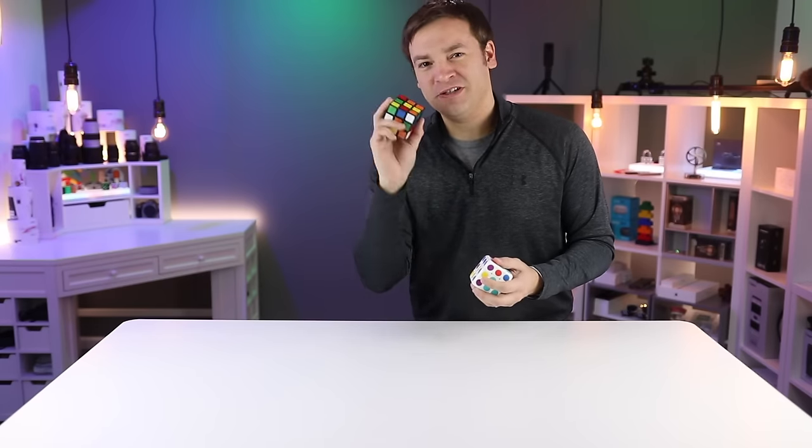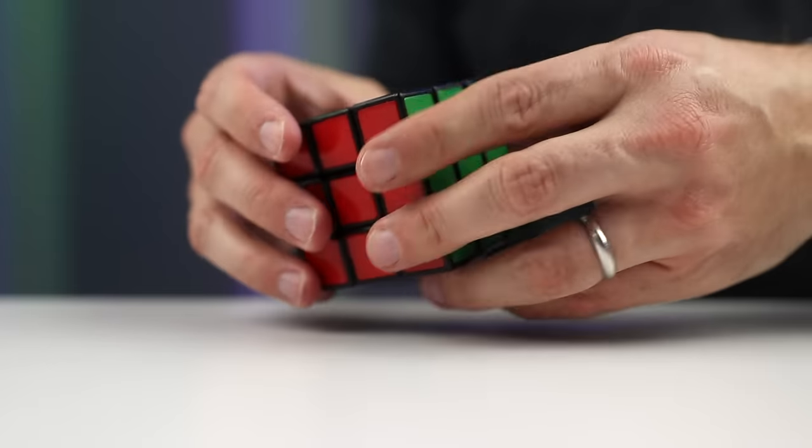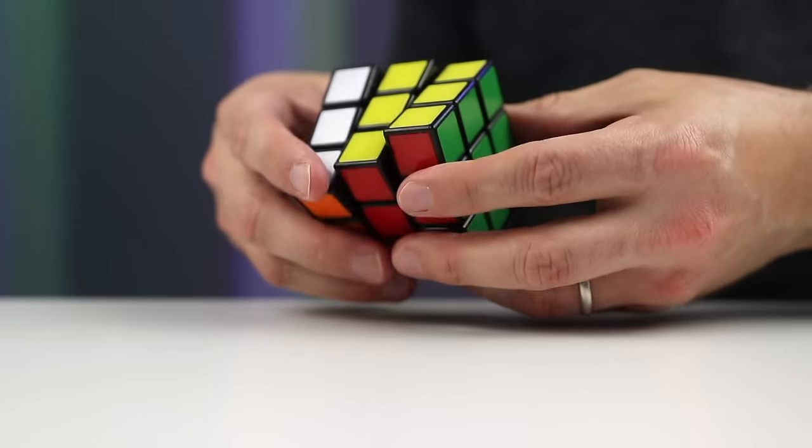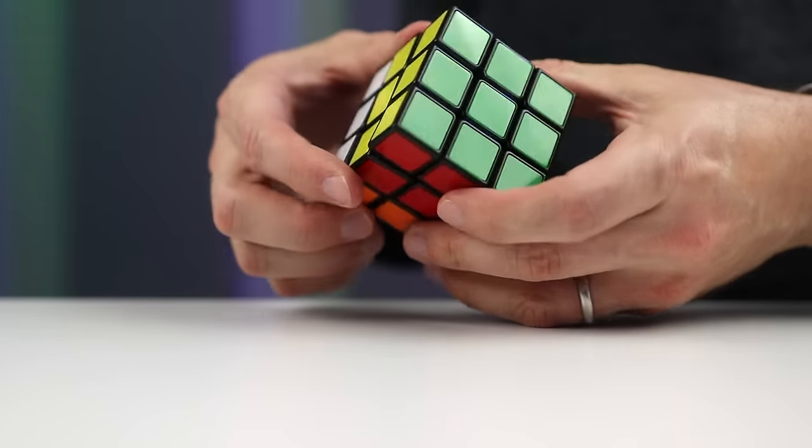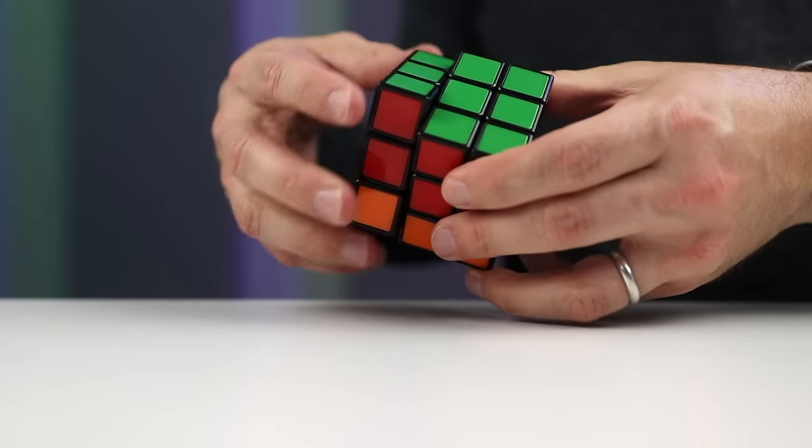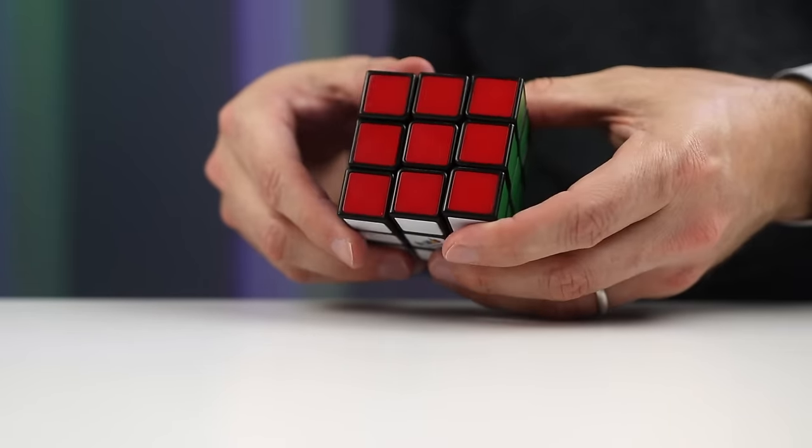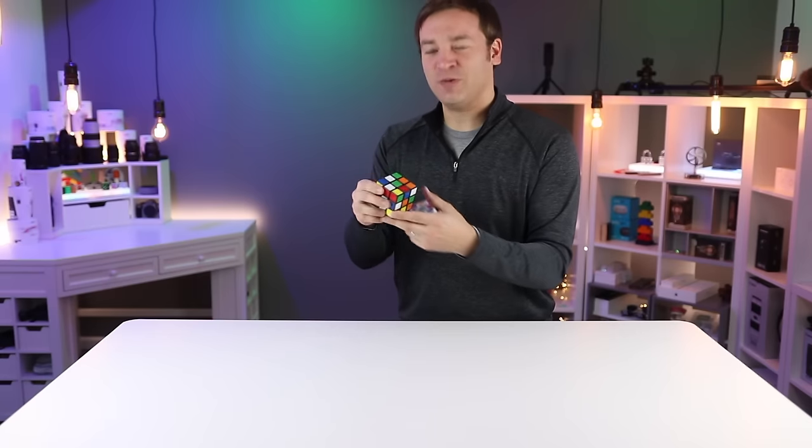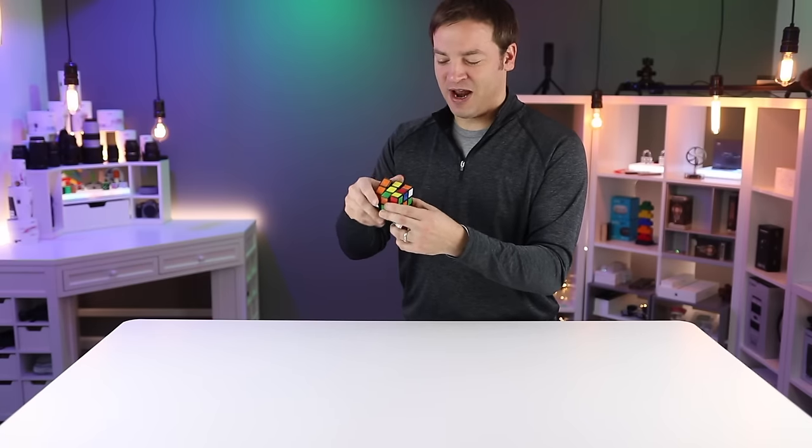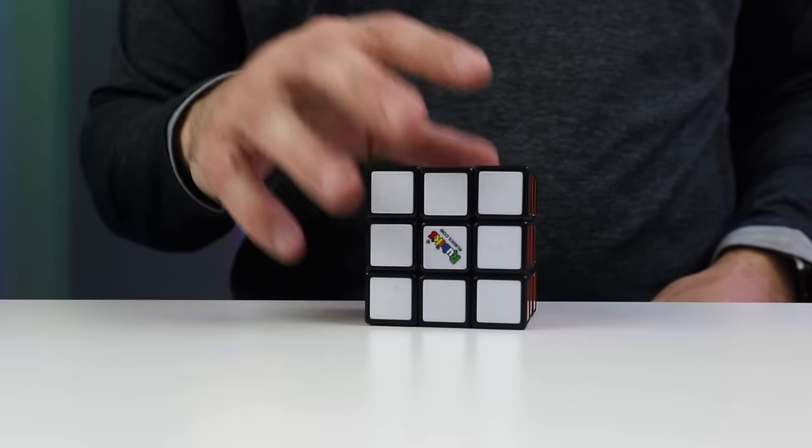First up is an oldie but a goodie, the Rubik's Cube. Luckily I don't have to explain how this works because everyone knows that you just spin these things around until you get too frustrated and give up trying to match up the colors on the sides. Well there are some people that actually know how to do this but most people don't. To fidget with it you're just gonna spin these things around and just play with them as you think. And maybe you'll magically get the colors lined up.